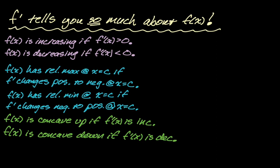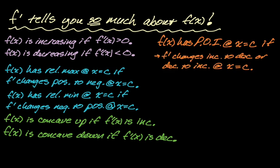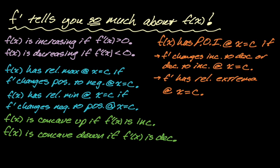f of x will have a point of inflection at x equals c in two equivalent ways. First, f prime changes from increasing to decreasing or decreasing to increasing at x equals c. But that's equivalent to saying f prime has a relative extrema at x equals c. You need to be aware of both, because sometimes with tricky questions you need to use one or the other.